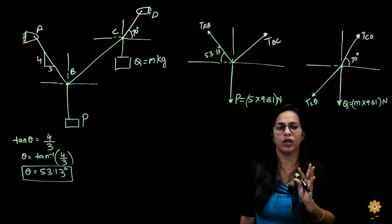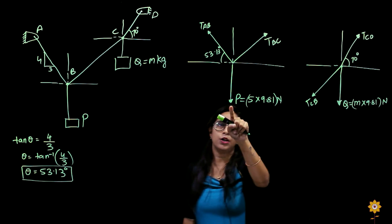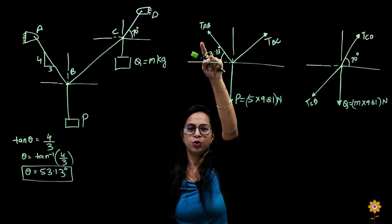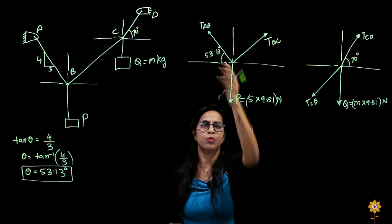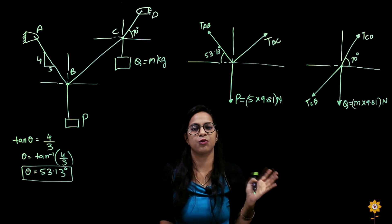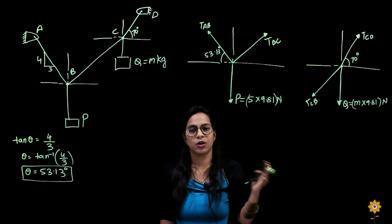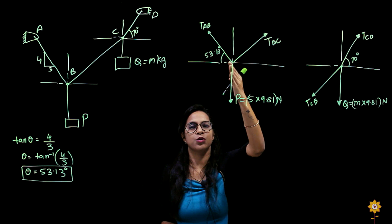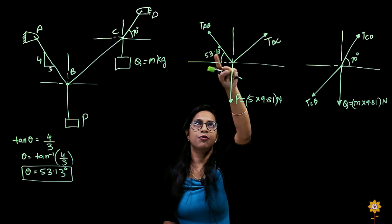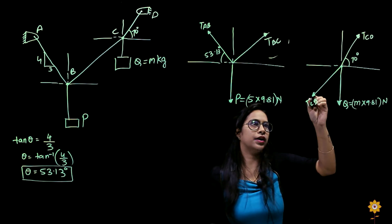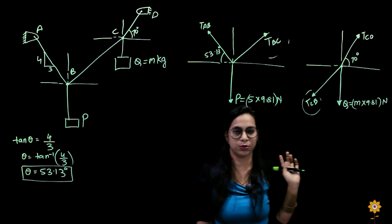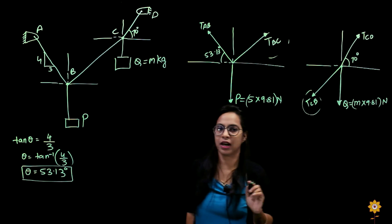In the figure for point C, all three forces are unknown, so we can't directly calculate Q. But at point B, I know the value of P, so I have only two unknown forces. I can find these two by equilibrium equations since their sum in x and y equals zero — it's a concurrent coplanar system. You can also apply Lamy's theorem. Once I find these two forces, TBC becomes the common known value linking both diagrams, allowing me to find Q.